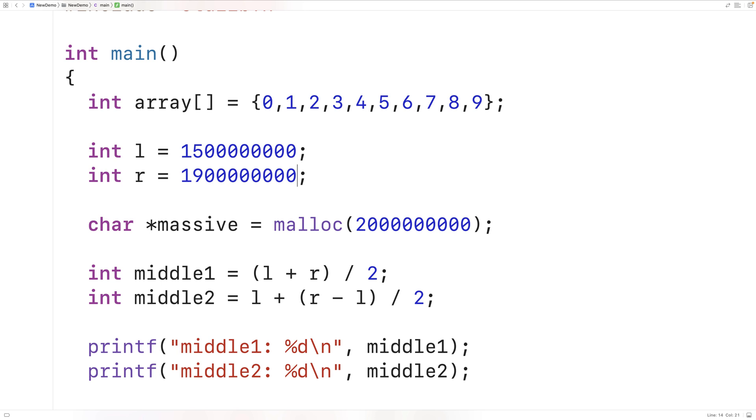So the issue with this first approach is that we're going to have 1.5 billion plus 1.9 billion. That's going to give us 3.4 billion, which is outside the range of what an int can store. We're going to have an integer overflow occur and middle1 will actually store some incorrect negative number. With this approach here, we're not going to have that problem because we first have R minus L.